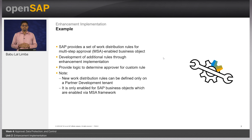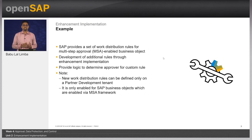Let us take a simple example to showcase the capability of enhancement implementation in Cloud Application Studio. SAP delivers business objects enabled with multi-step approval processes. With each business object there are work distribution rules provided which evaluate the approver at each step. For instance, the purchase order approval definition has a rule called 'approval by cost center manager' which assigns the approval task to the manager of the cost center. However, this is pre-delivered by SAP and not all use cases are covered. Partners can develop additional rules for multi-step approval-enabled SAP business objects through enhancement options and provide their own implementation to determine the approver.